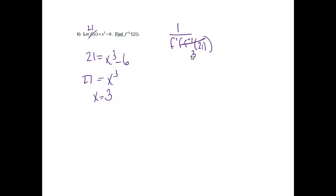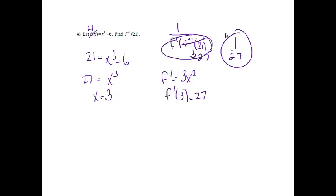And now I need to find the derivative at 3. So f prime is going to equal 3x squared. And if I find the derivative at 3, if I plug 3 in, I will get 27. So then from here, this whole thing is now 27, so I'll get 1 over 27. That will be my derivative.